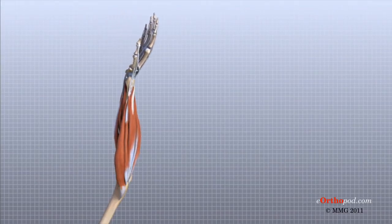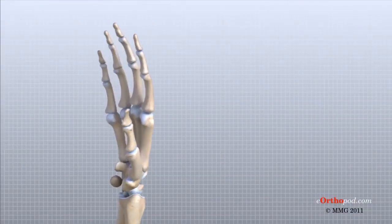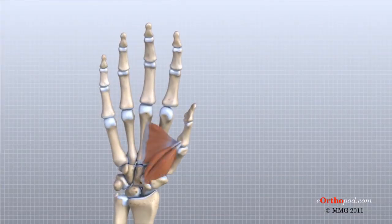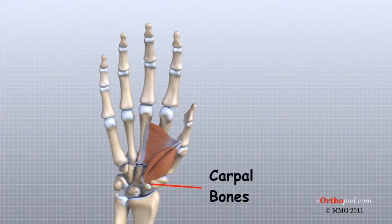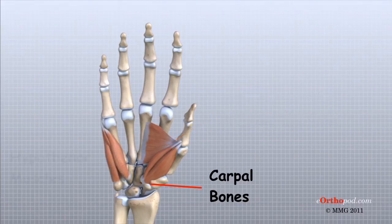Many of the muscles that control the hand start at the elbow or forearm. They run down the forearm across the wrist and hand. Some control only the bending or straightening of the wrist, while others influence motion of the fingers or thumb. Many of these muscles help position and hold the wrist and hand while the thumb and fingers grip or perform fine motor actions. Most of the small muscles that work the thumb and little finger start on the carpal bones. The bulge of muscle at the base of the thumb in the palm is called the thenar eminence, and the bulge of muscle at the base of the little finger is called the hypothenar eminence.